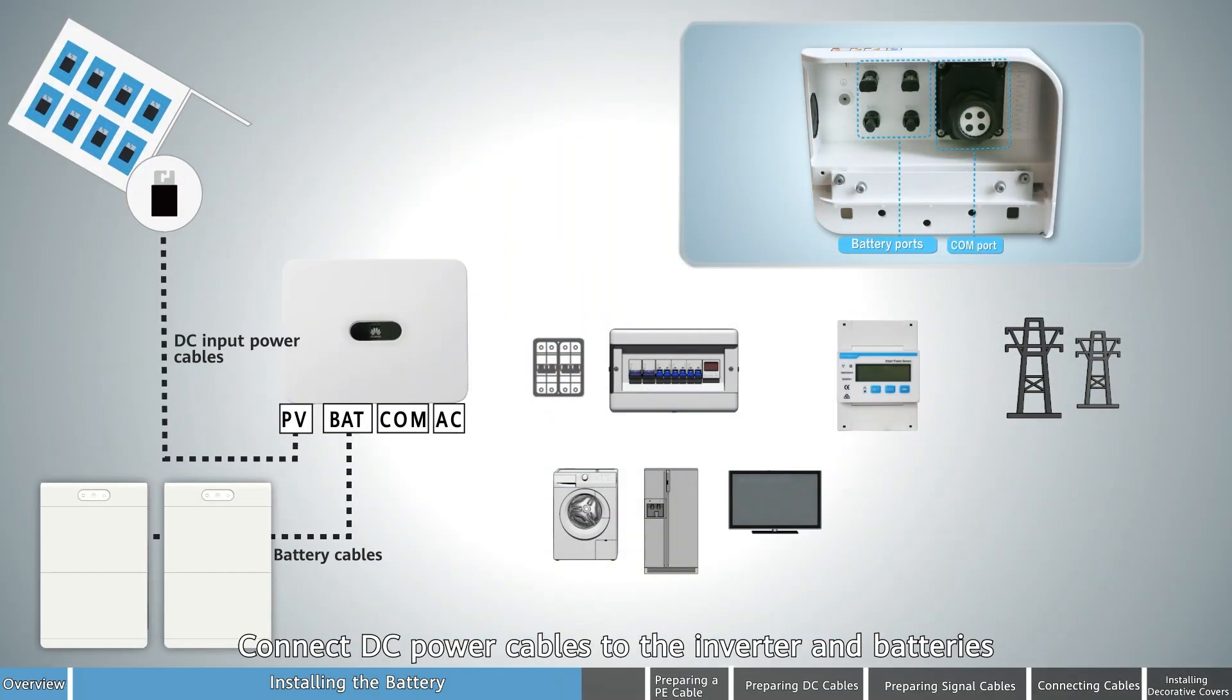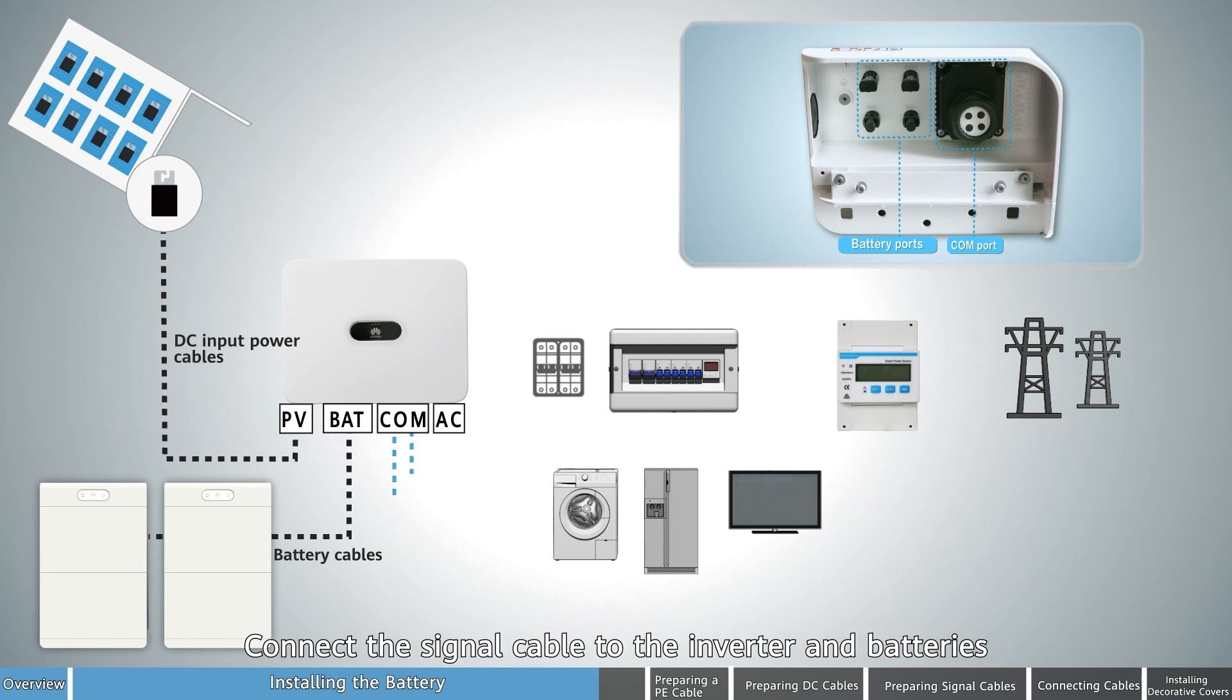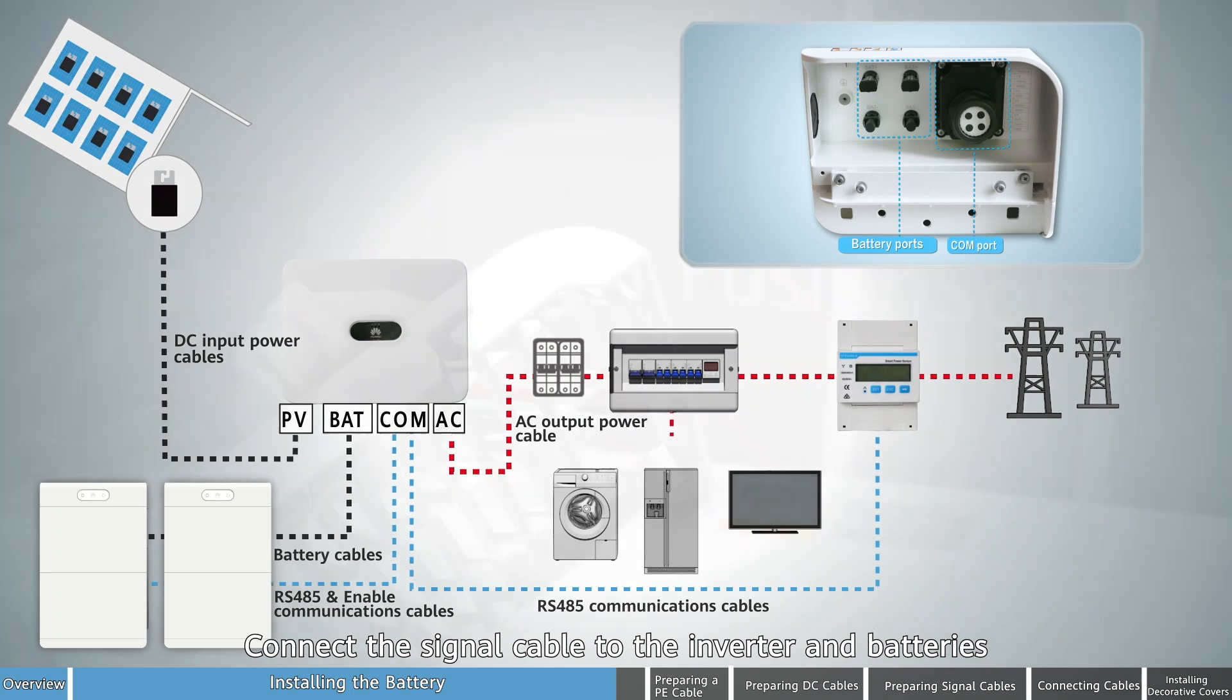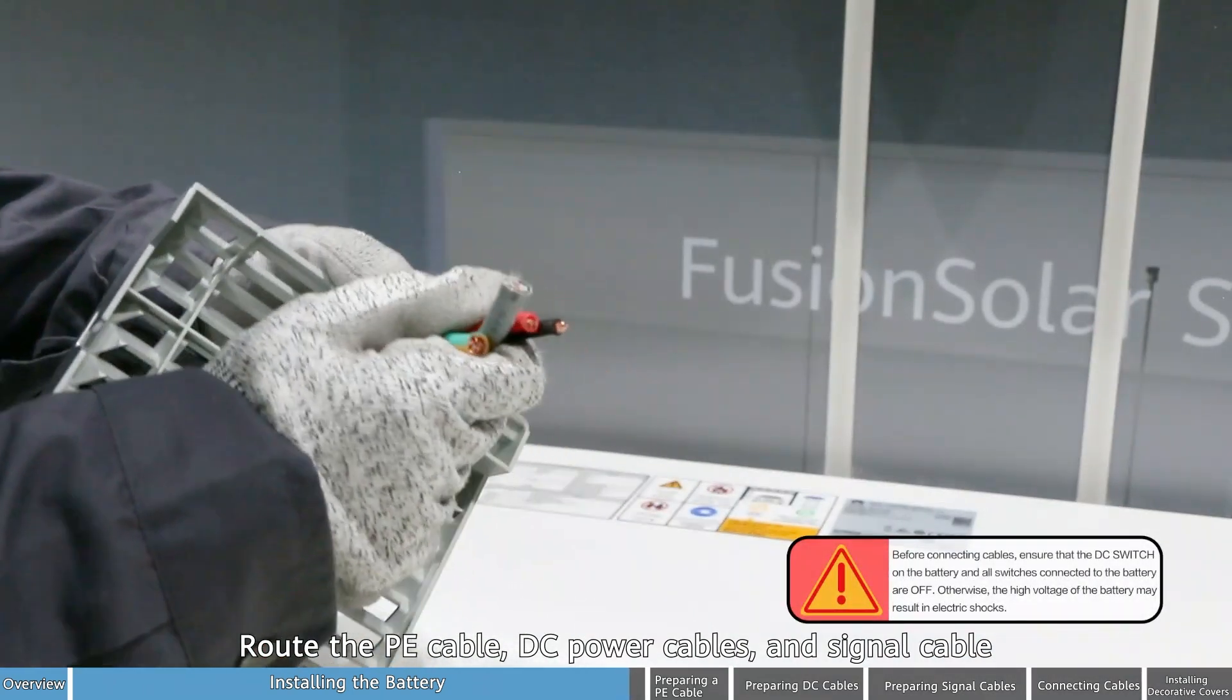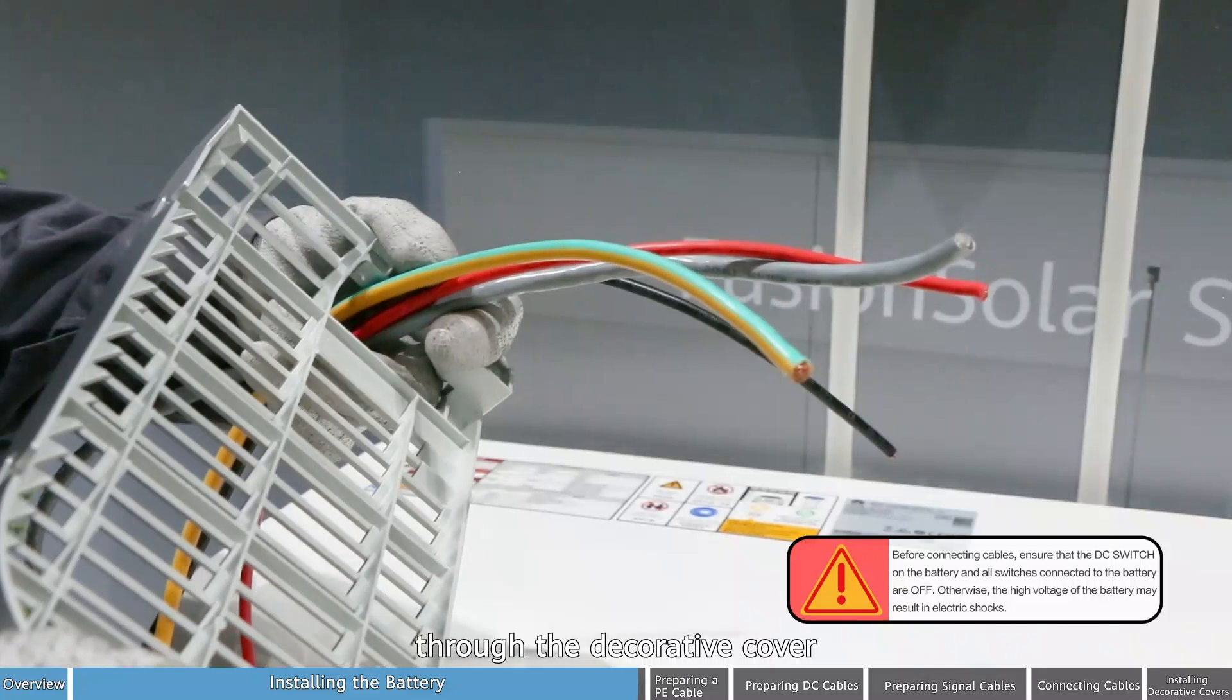Connect DC power cables to the inverter and batteries. Connect the signal cable to the inverter and batteries. Route the PE cable, DC power cables and signal cable through the decorative cover.